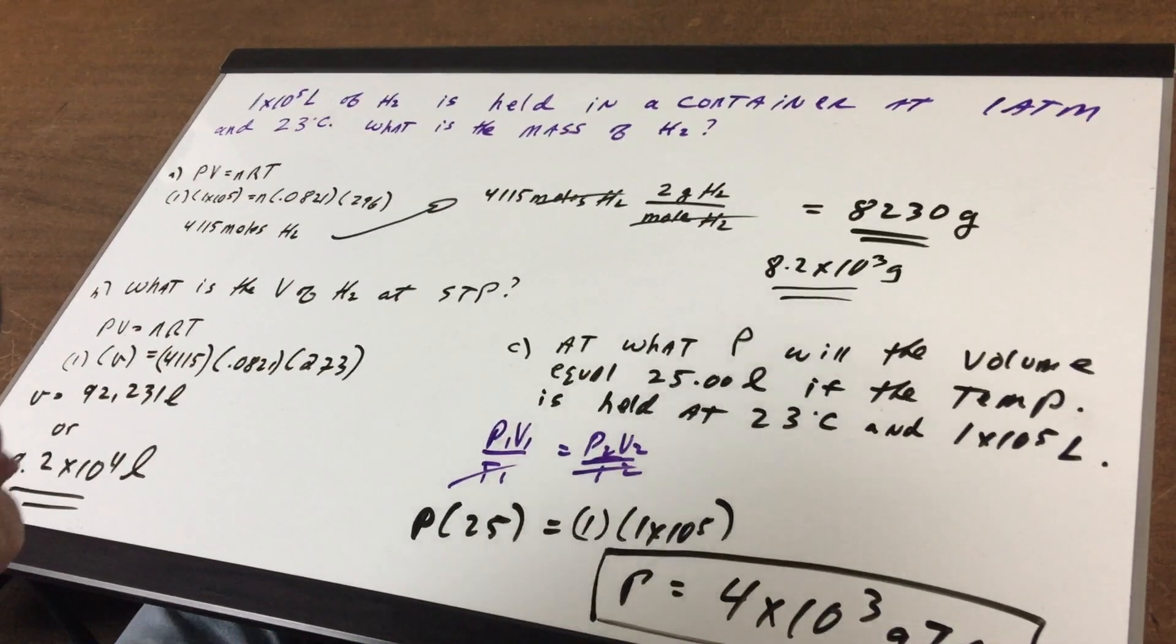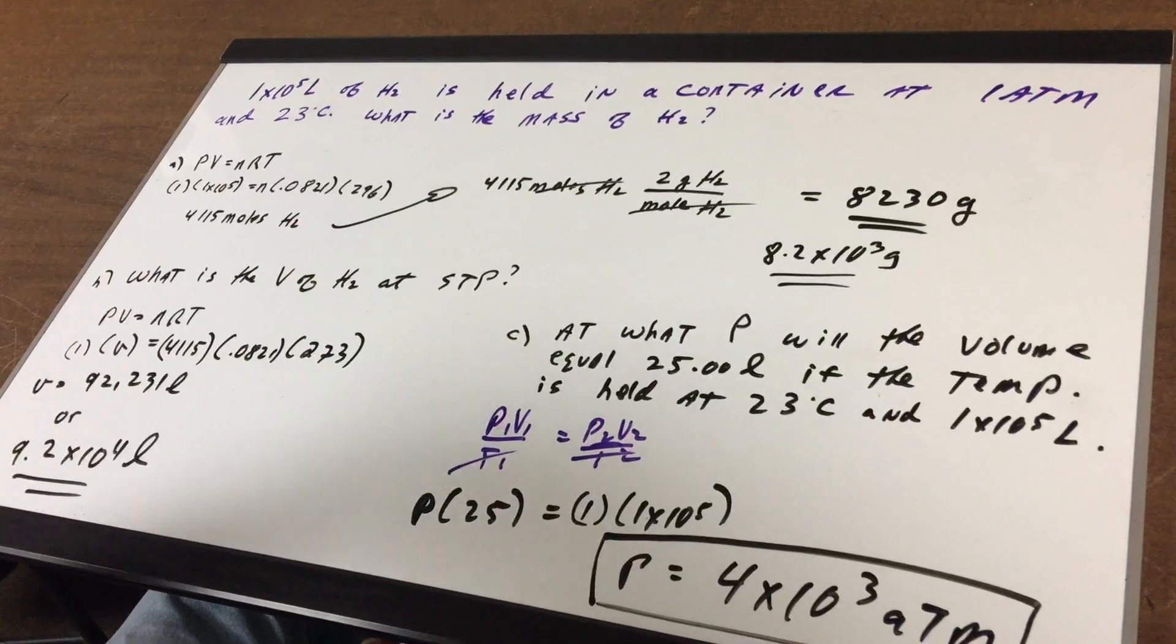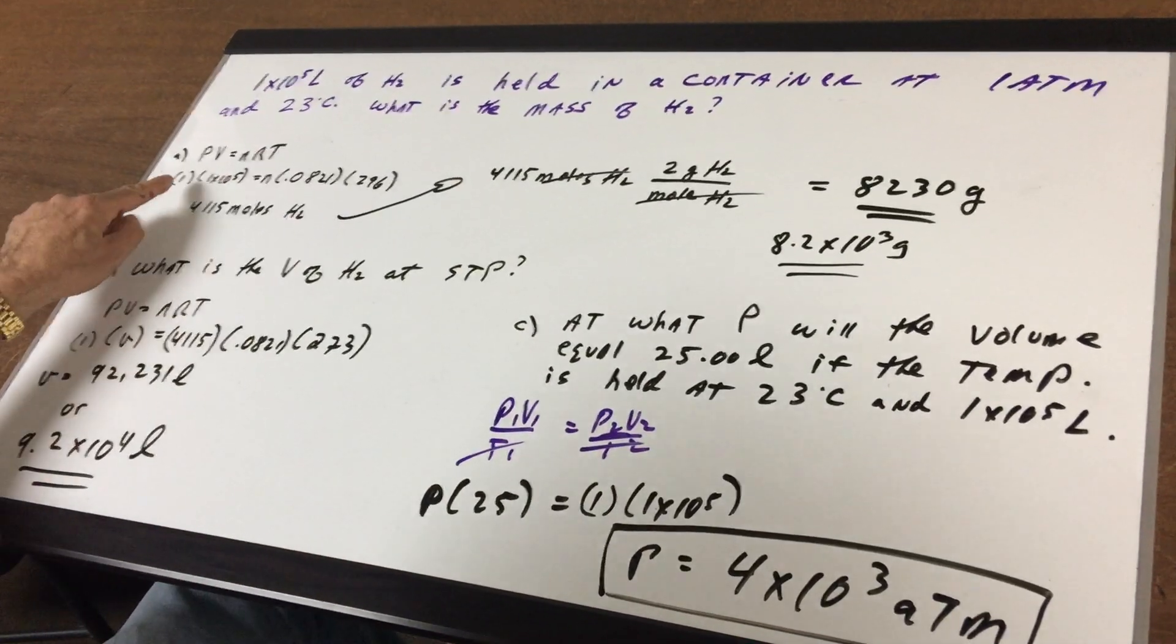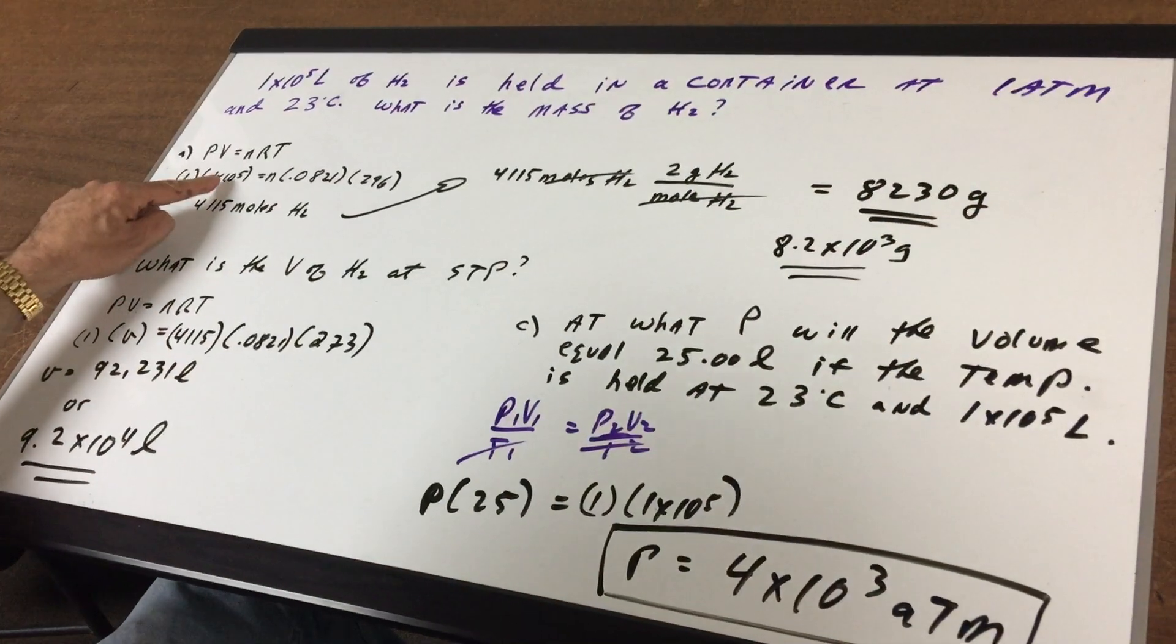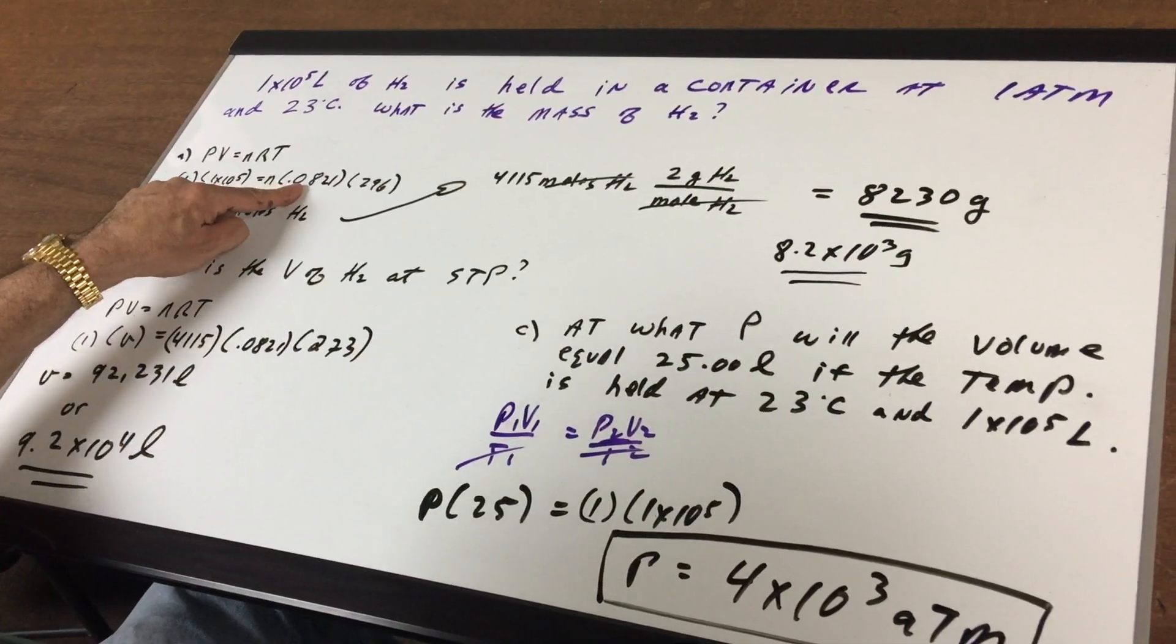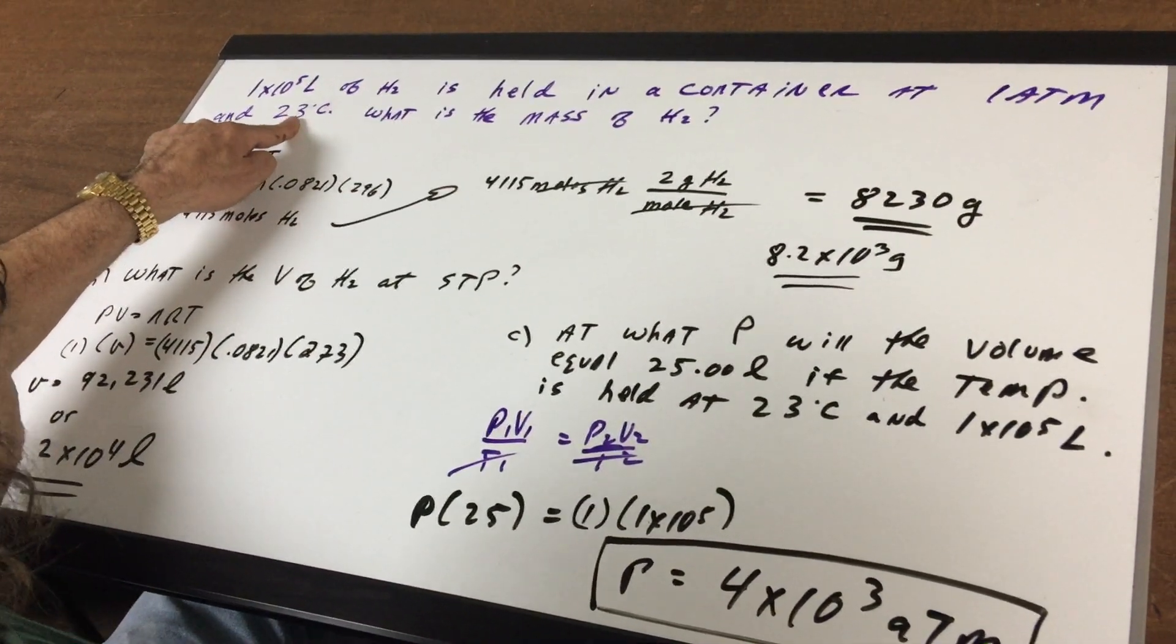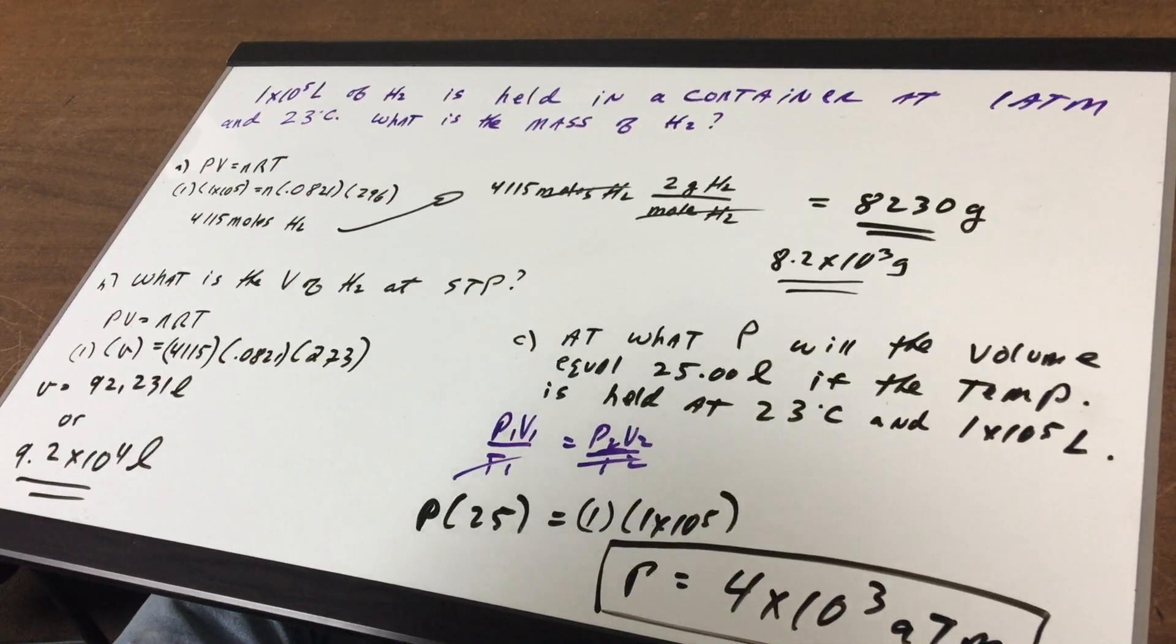The R is 0.821. That's going to be given to you on the DAT, so don't worry about that. So we're going to plug in them. The pressure is in atmosphere, so it's 1. We know the volume. There's the R. You have to add 273 to the 23 to get 296.